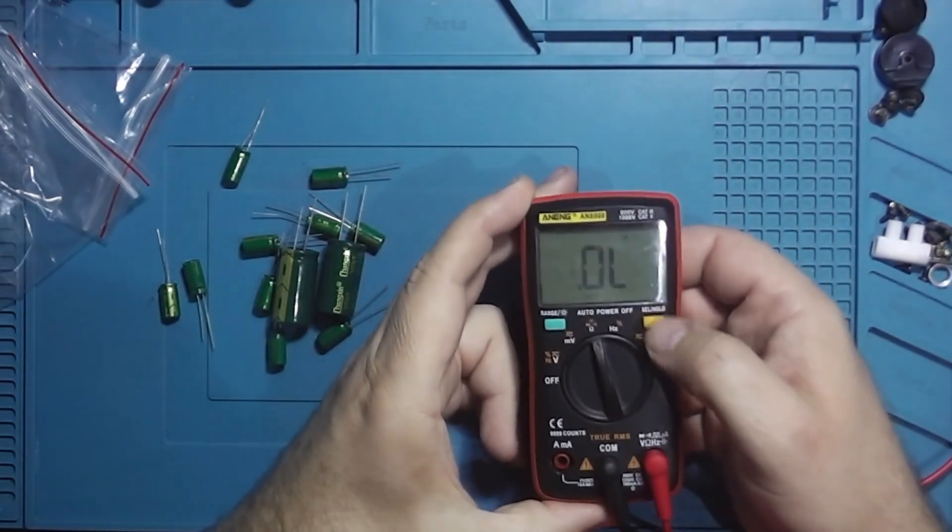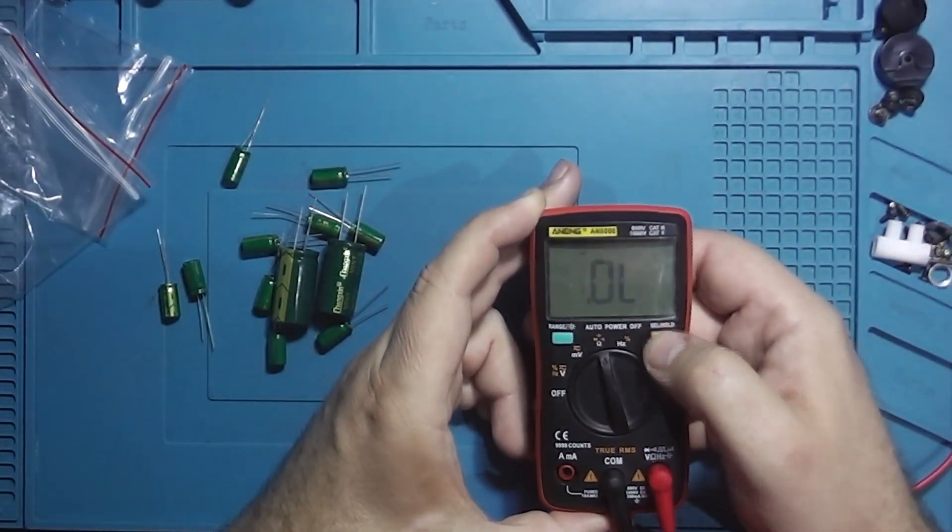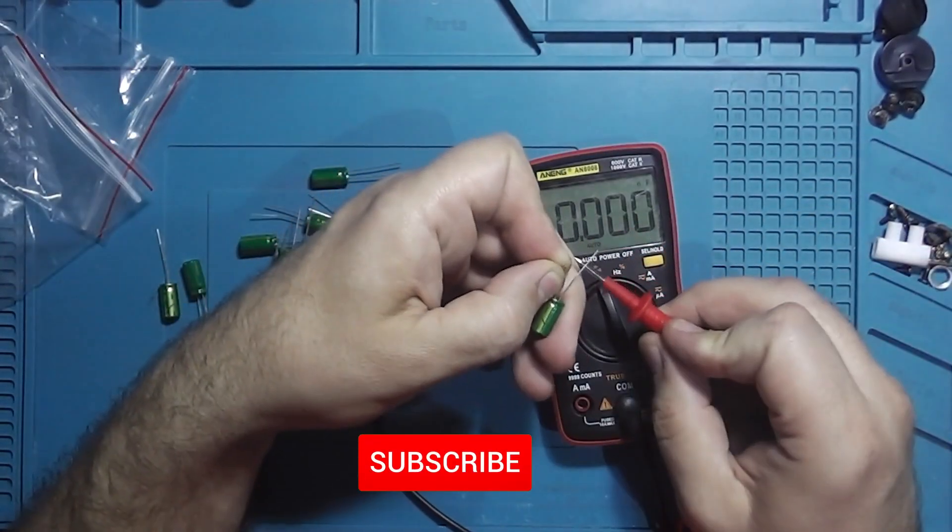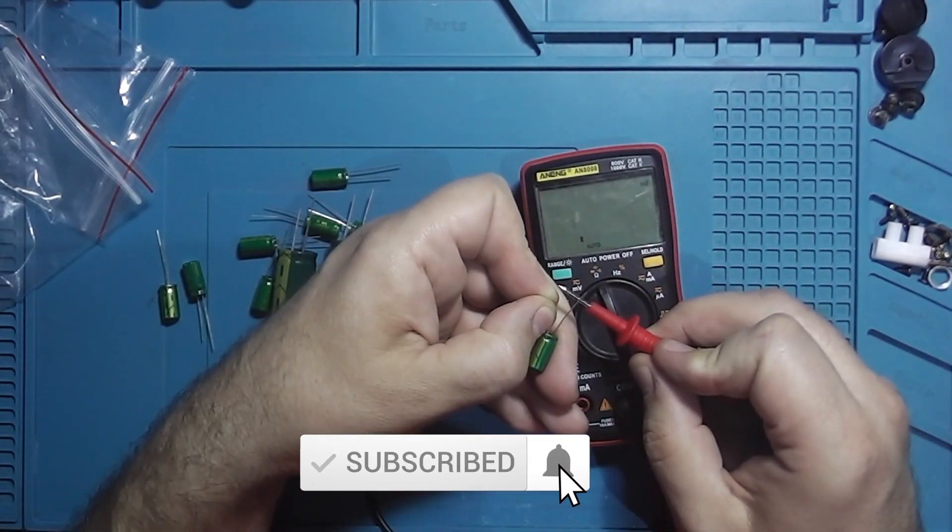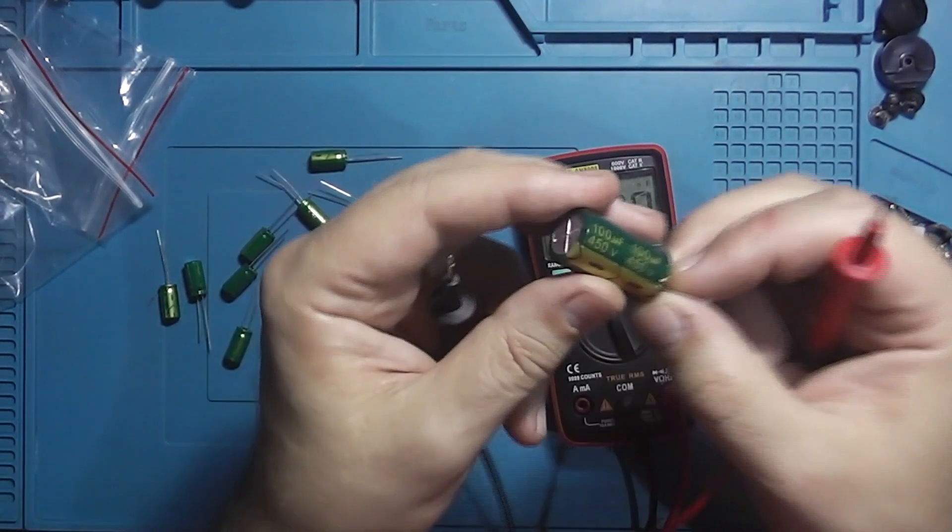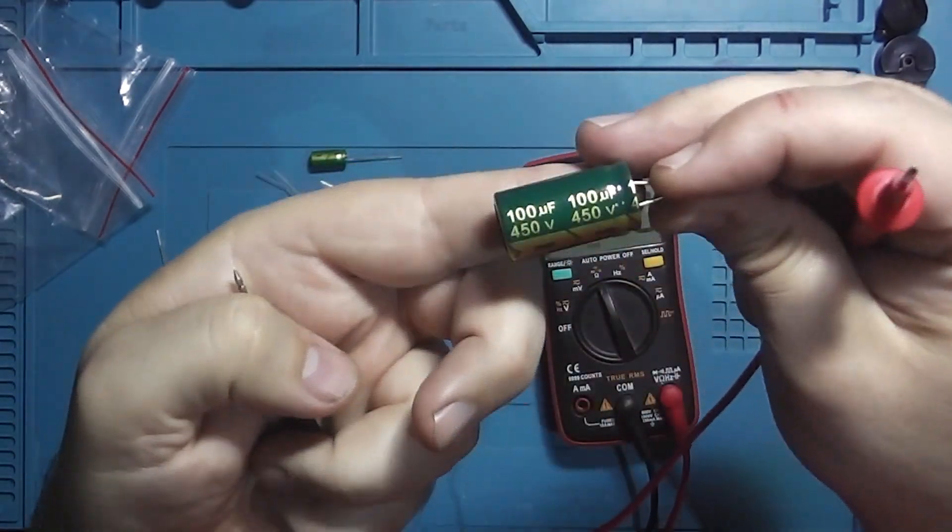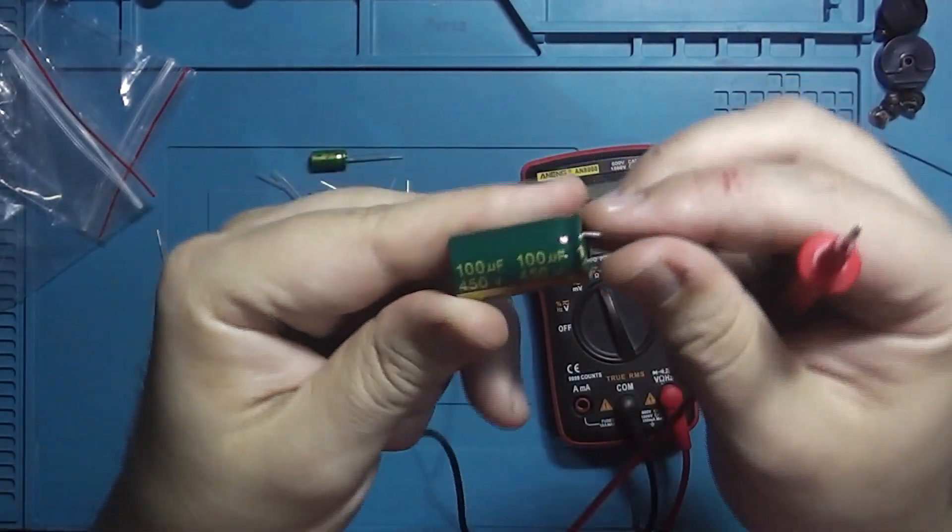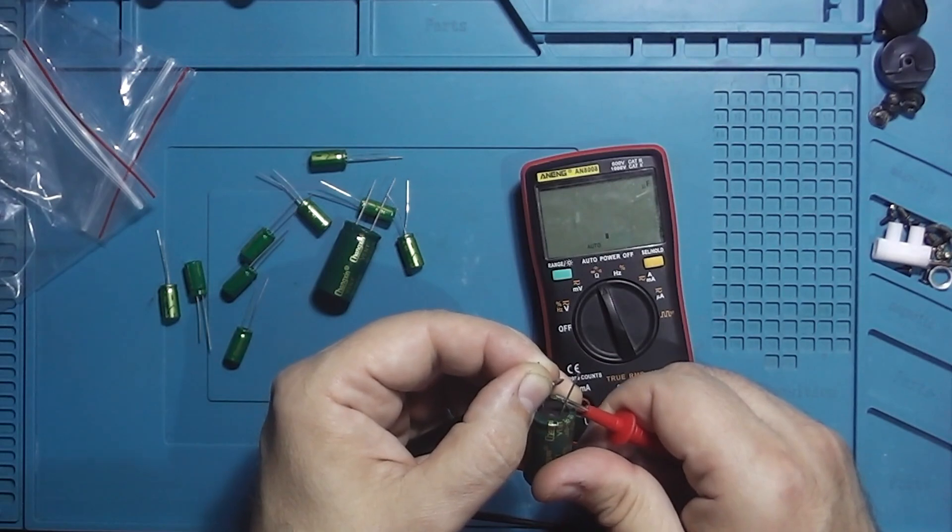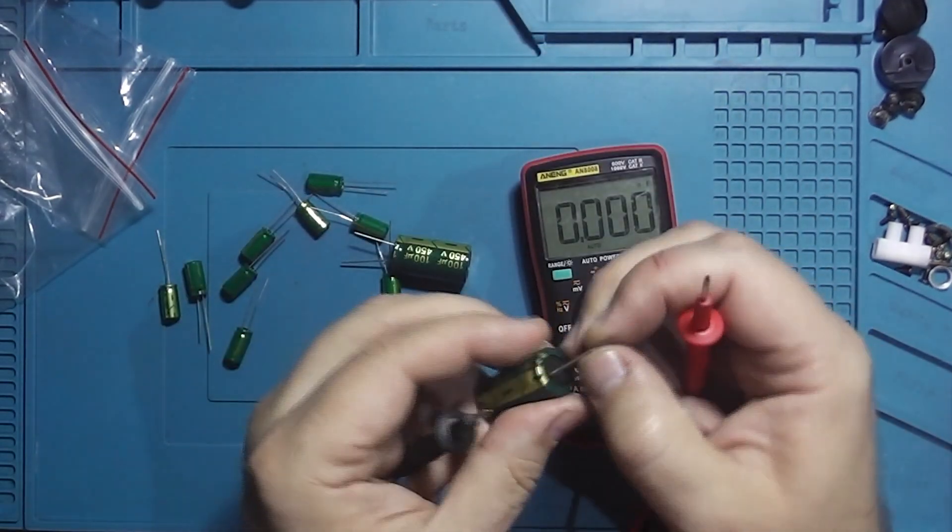First up is my beloved Aning Universal instrument, so let's see the results. First, we have a 1000 microfarad 16 volt capacitor that looks like the real deal. Then there's a 100 microfarad 450 volt capacitor. Look at the size of this one, quite impressive. Both seem to be good quality.